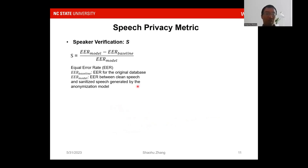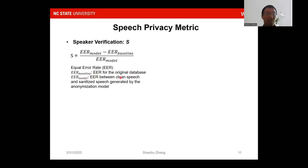Next, we develop speech privacy metrics. Existing works use speaker verification equal error rate to measure speaker verification accuracy. We also normalize the speaker verification score S. We first calculate the equal error rate for the original database, and then calculate the EER between the clean speech and the anonymized speech generated by the anonymization models. This gives us the normalized speaker verification equation.